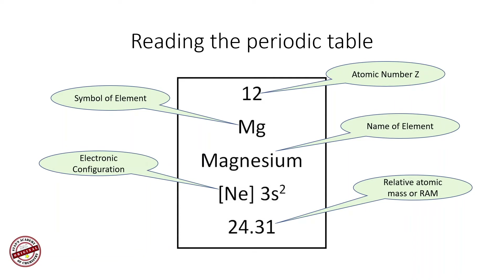If you are asked to determine the mass number for magnesium from the periodic table, you take the relative atomic mass and round it off to the nearest whole number. In this case it becomes 24. You should not get confused between the atomic number Z and the mass number — we deduce the mass number by rounding off the relative atomic mass. So here, atomic number is 12 and mass number is 24.